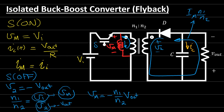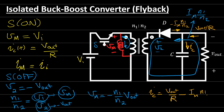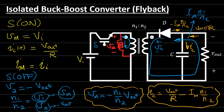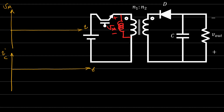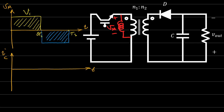The capacitor current Ic equals the current from the resistor, V_out/R, plus the current coming from the secondary, which is minus Im times N1/N2. Now, when the transistor is conducting, Vm equals V_in. When the switch is off, Vm equals minus V_out times N1/N2. Let's draw these waveform relations: during the on-time, Vm equals V_in; during the off-time, Vm equals minus V_out·(N1/N2).